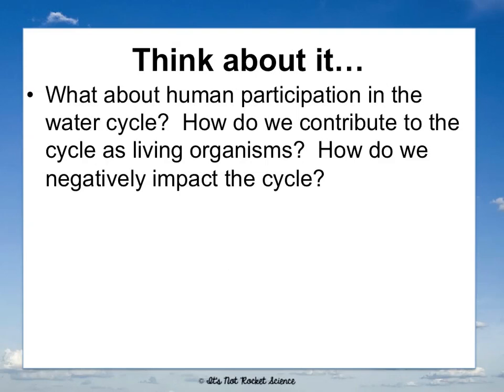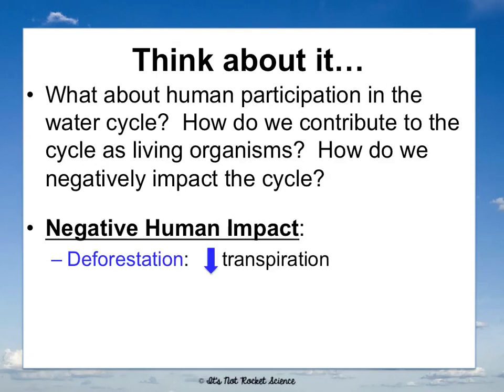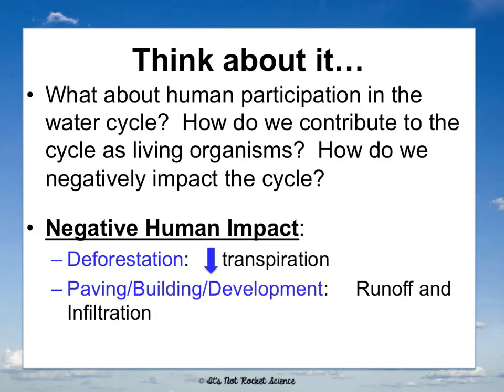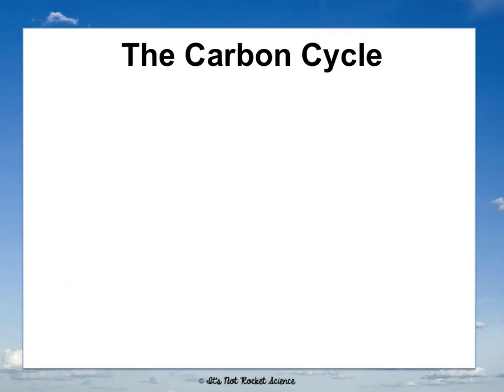How do humans negatively impact the water cycle? Deforestation decreases transpiration because there are fewer trees to return water to the atmosphere. Paving and building increases runoff and decreases infiltration because pavement can't absorb water. Pollution also has a negative impact by contaminating water and can create acid rain, which is never a good thing.